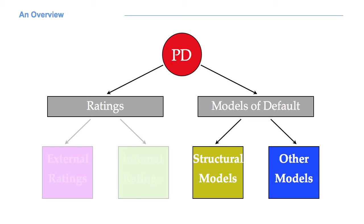If we consider the other class, the one of default models, we can make a clear distinction between structural and non-structural models of default. A structural model of default is a model in which default happens when the assets of a company reach a sufficiently low level with respect to liabilities. This family of models includes some of the most important models in credit risk management, such as Merton's model and proprietary models like Moody's KMV and JP Morgan's CreditMetrics.